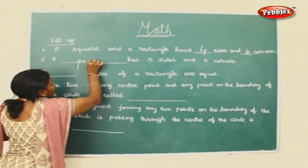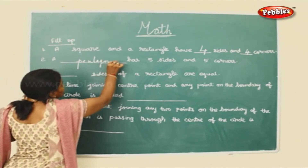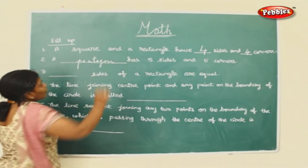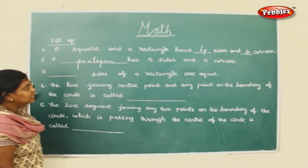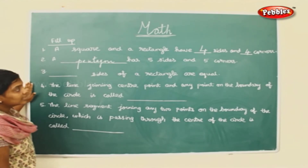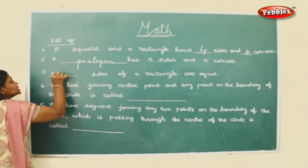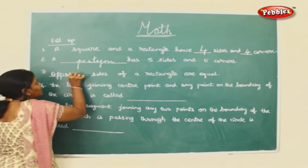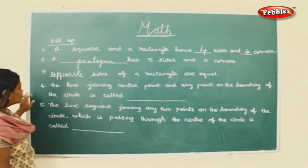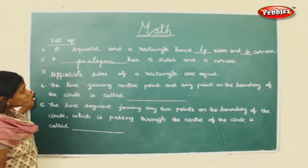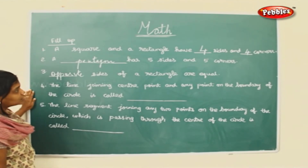A pentagon has five sides and five corners. Which sides of a rectangle are equal? The opposite sides. The opposite sides of the rectangle are equal.